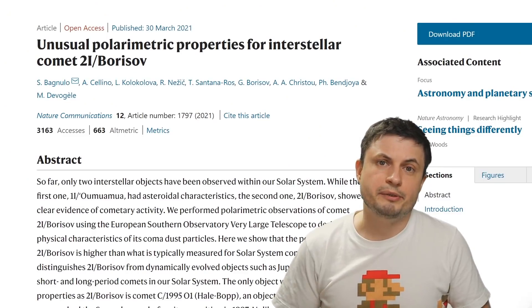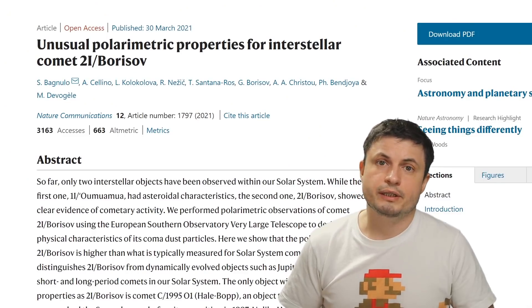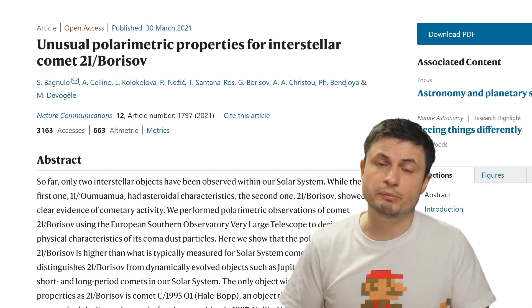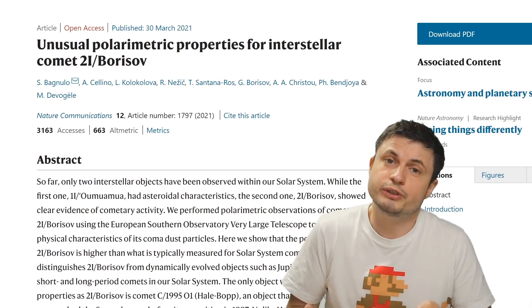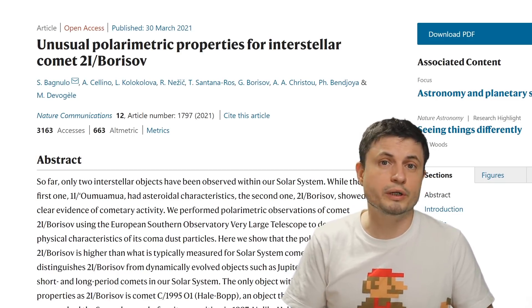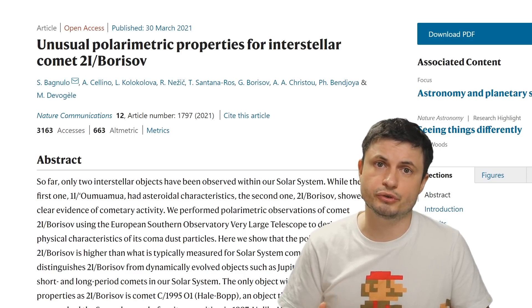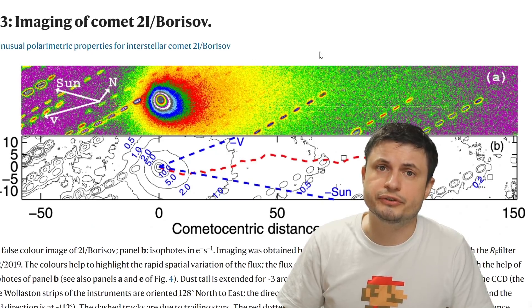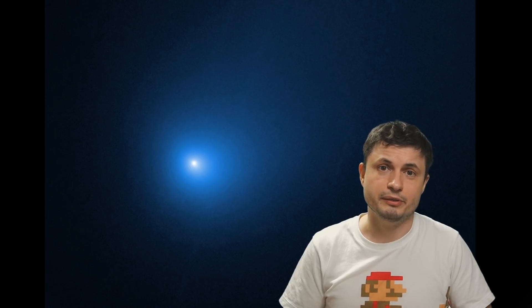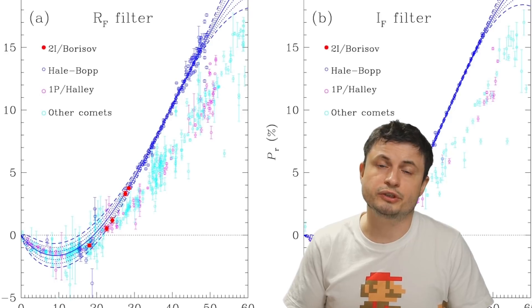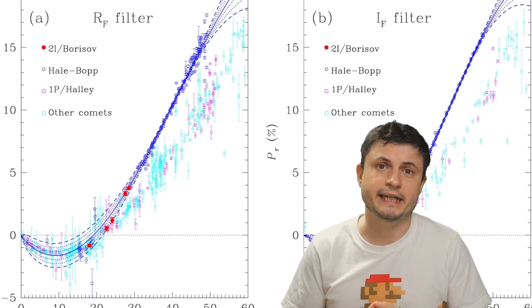And so when the scientists behind the paper, you can find in the description below, compared the polarimetric observations from Hale-Bopp to comet Borisov, they found that the comets were extremely similar, but Borisov was even more pristine, it had even more unusual untouched materials on the surface. Implying that the polarized light produced by the comet as it was moving close to the sun, was a lot more similar to Hale-Bopp than it was to other comets. And this of course means that the materials emitted from this comet were very similar to this other comet we saw back in 1995.